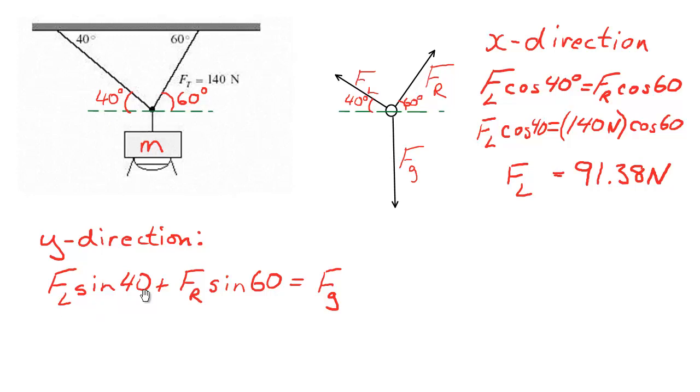The sine of FL, which is this component right here, this vertical component on the left, plus the sine of FR, which is this vertical component on the right. Those two vertical components have to add to Fg. In other words, forces added up in the upwards direction have to equal forces down to be in equilibrium.